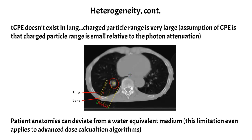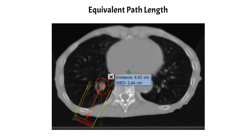There are some things we can do to mitigate the effects of heterogeneity. We can use something known as the equivalent path length. For example, the physical distance to the center of a tumor along the central axis might be about seven centimeters, but the water equivalent distance, or WED, might be about 3.4 centimeters. This accounts for the varying Hounsfield units along the beam path by scaling the actual physical depth by the density of the tissue present. Since so much lung tissue is traversed, the WED is shorter, as if passing through a smaller amount of water. It is a crude approximation that doesn't fully account for tissue differences, but it makes calculations slightly more accurate.